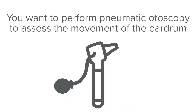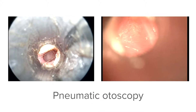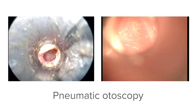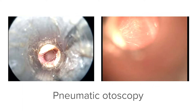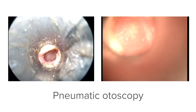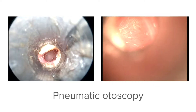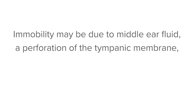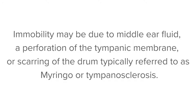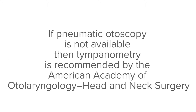You want to perform pneumatic otoscopy in order to assess the movement of the eardrum itself. Here you can see two examples of pneumatic otoscopy — an eardrum that is moving easily with pressure changes, which confirms that the middle ear is mobile at the time of the assessment. Immobility may be due to middle ear fluid, a perforation of the tympanic membrane, or scarring of the drum, typically referred to as myringosclerosis or tympanosclerosis.